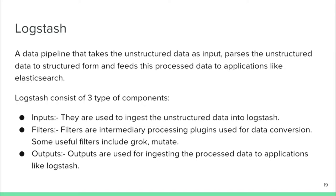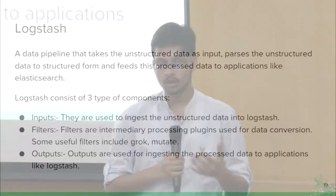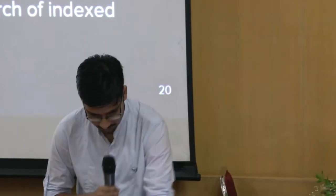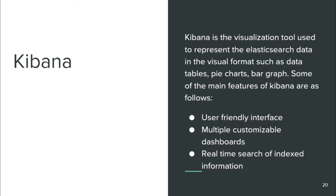Logstash is a data pipeline that takes unstructured data as input, processes it, converts it into structured form, and feeds that data to applications like Elasticsearch. Its three major components are inputs, filters, and outputs. Kibana is a visualization tool used to represent Elasticsearch data in visual formats. Key features include a user-friendly interface, multiple customizable dashboards, and real-time searching of indexed data.